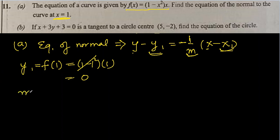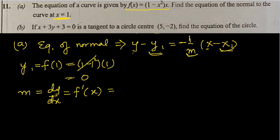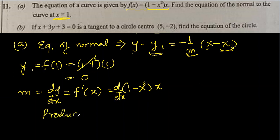Now we need to focus on m. M is the gradient of the tangent, not the normal — which is the same as the differentiation of the curve evaluated at x equal to 1. So f prime of x applied to 1 minus x squared times x. We will find the differentiation of this — we can expand the bracket or use the product rule. Let's use the product rule.